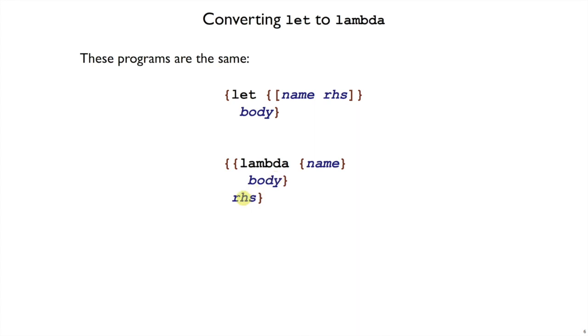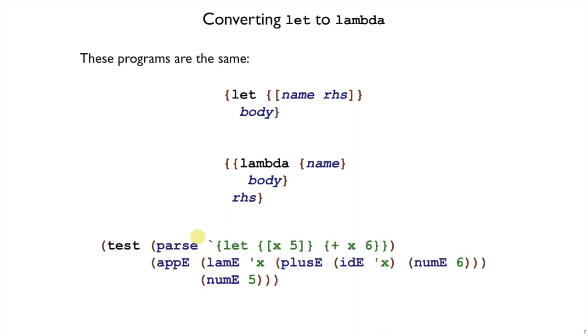Because of this correspondence, we don't actually need a let e form in our interpreter. We could change parse so that when it sees a let form, it just generates the same lam e app e pattern suggested by this equivalence. It pulls out the same pieces, the x, 5, and plus x 6, but puts them together in a slightly different way with lam e and app e.